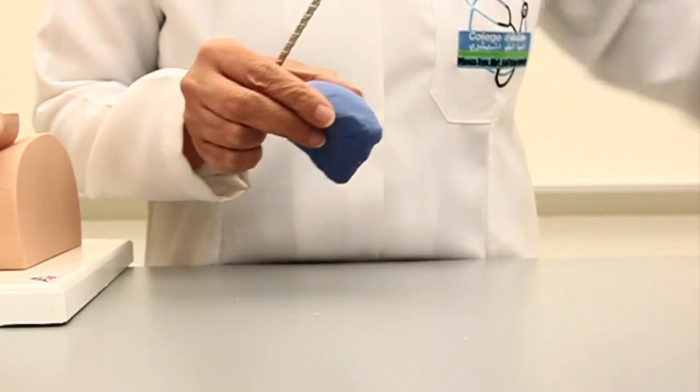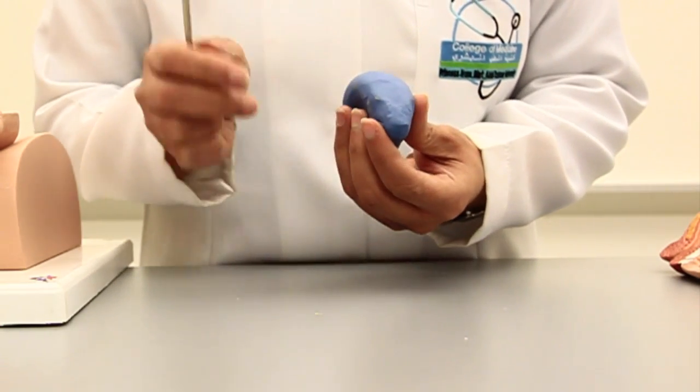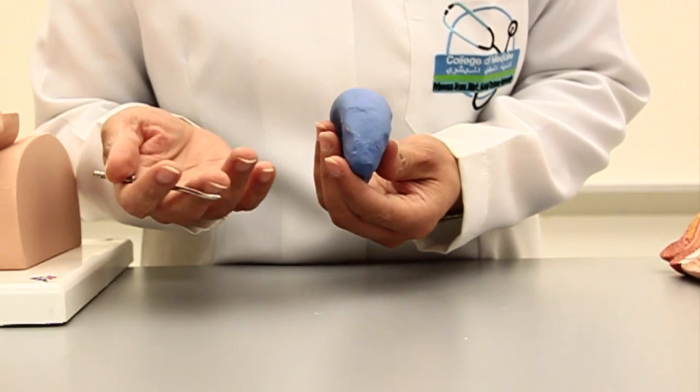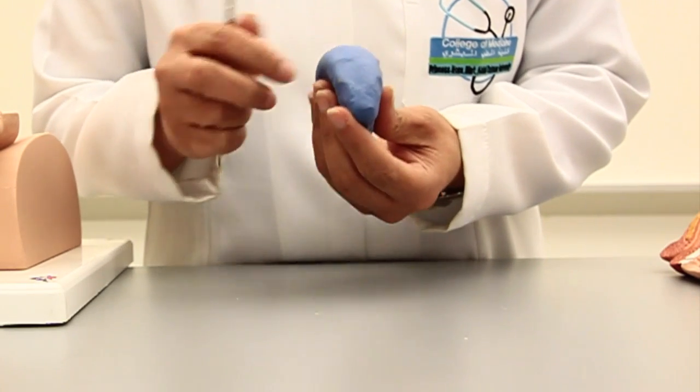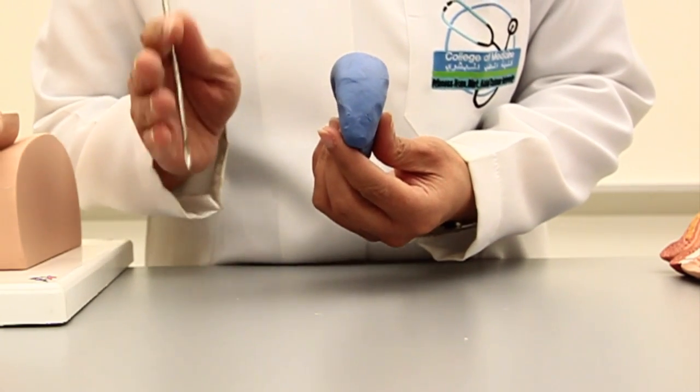So here, when I say in an empty state the urinary bladder is a tetrahedral structure, by that I mean to say it has four surfaces or four walls.